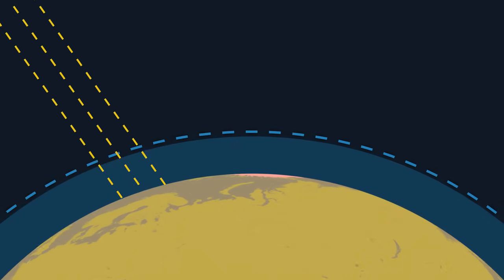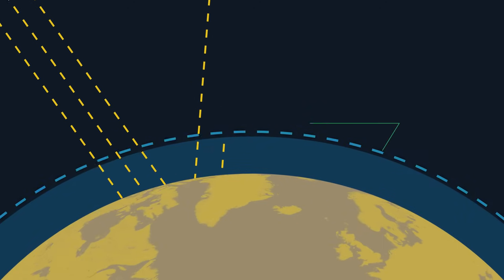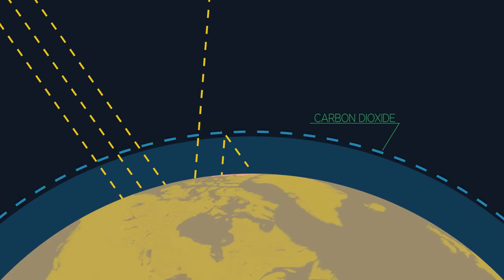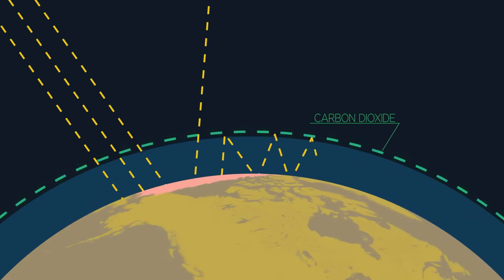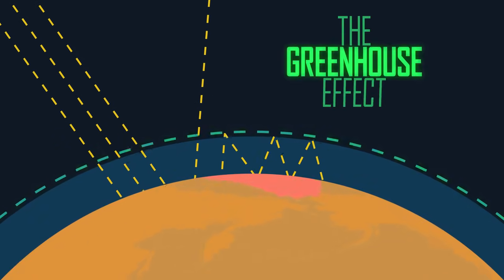The rest of that energy gets reflected. Some of that energy goes back out into space, but greenhouse gases like carbon dioxide trap the energy and send it right back to the Earth's surface, heating it up even more. This is known as the greenhouse effect.